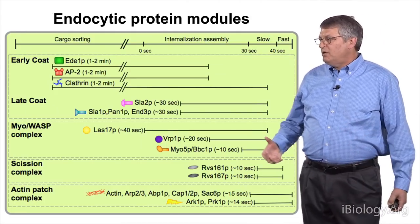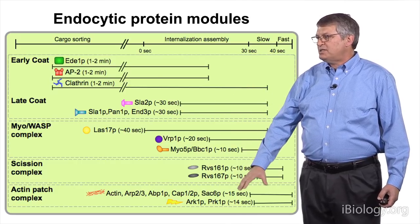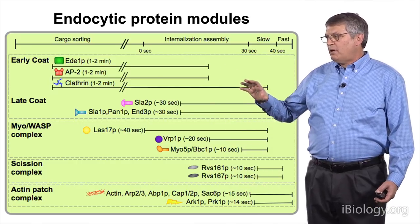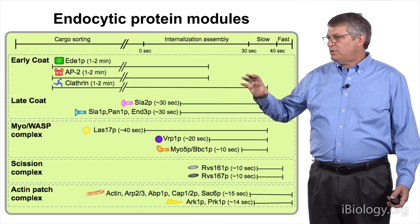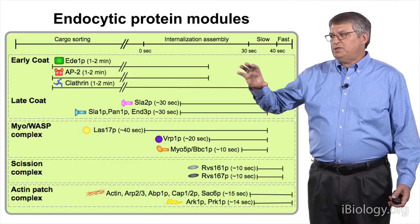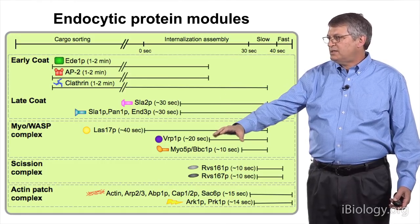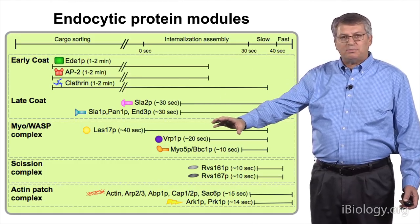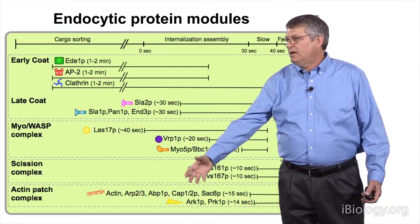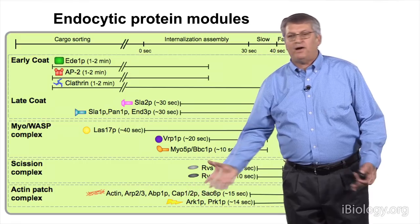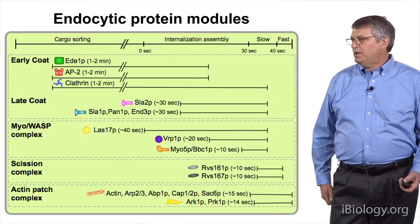Putting this all together, we came up with the idea of a modular design of the endocytic pathway. Based on function and the kinetics and timing of protein recruitment, we could group the proteins as coat proteins — subdivided into early and late — a myosin-WASp module that nucleates actin and generates forces, a scission complex, and then all the actin machinery that arrives very late in the process.